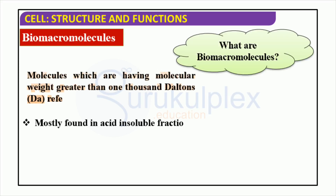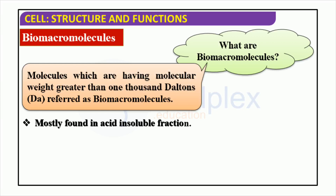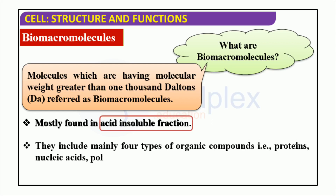Biomacromolecules are large organic molecules found in living organisms with molecular weights of over 1,000 daltons, making their structures more complex than smaller molecules. They include proteins, nucleic acids, polysaccharides, and lipids, each playing a different role in the functioning of a biological system. Proteins are used in energy metabolism and muscle contraction, nucleic acids are essential for genetic expression and regulation, polysaccharides act as storage molecules, and lipids form cell membranes. Overall, biomacromolecules are vital components of all living organisms.